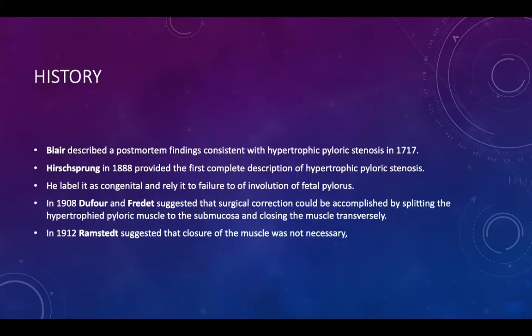Historically, the first description of a post-mortem finding was in 1717. Blair and Hirschsprung provided the first complete description of pyloric stenosis, labeling it as congenital and related to failure of involution of the fetal pylorus. We will see later whether it is truly congenital. In 1908, the first surgical correction was performed by splitting the hypertrophic pyloric muscle and closing it transversely.